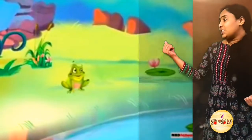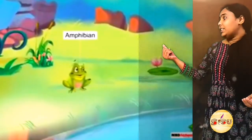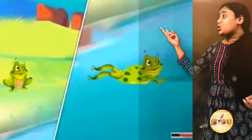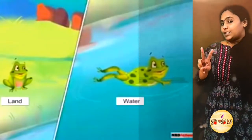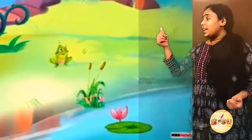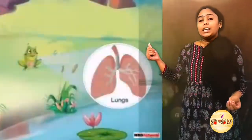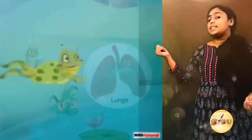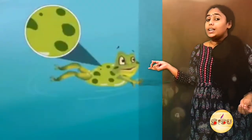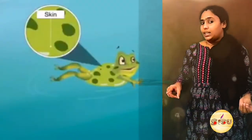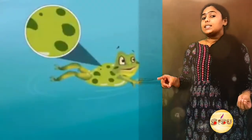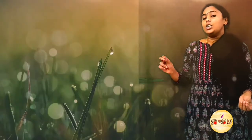See this children — this frog has two types of breathing organs. When it lives on land, it breathes through its lungs. And when it lives in the water, it can breathe through its moist skin.